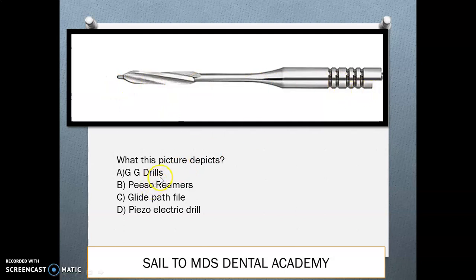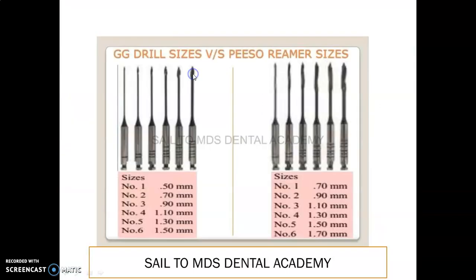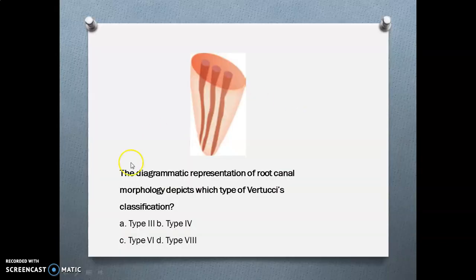This picture depicts piezo reamers — your glide path file or piezoelectric drill. You need to differentiate between piezo reamers and GG drills. Piezo reamers have a thick shaft with long sharp flutes, whereas GG drills have a flame-shaped head and a very thin shape. Both instruments come in sizes number 1 to 6. GG drills vary from 0.5 to 1.5 mm and piezo reamers from 0.7 to 1.7 mm.